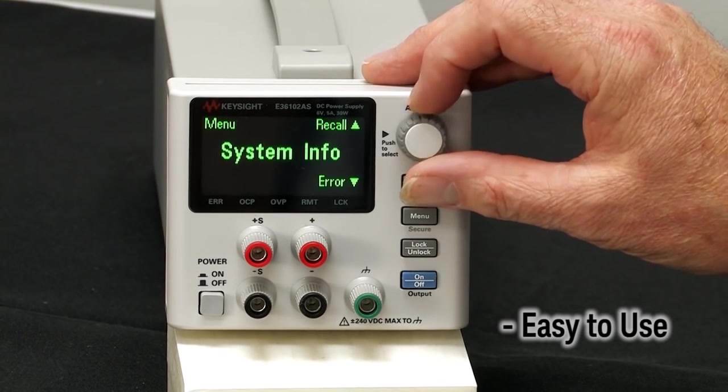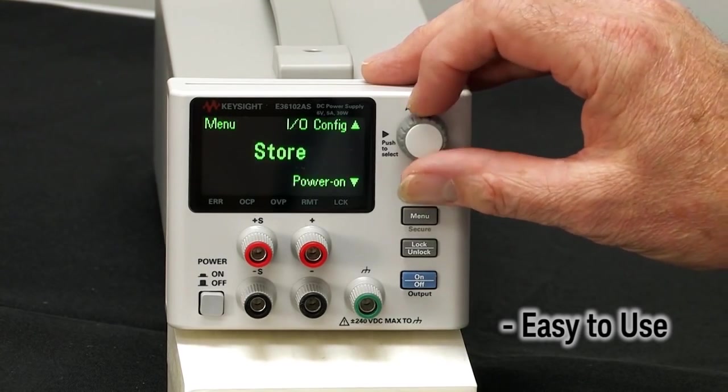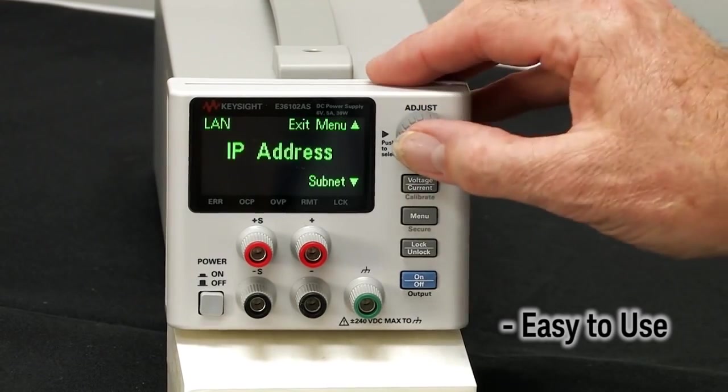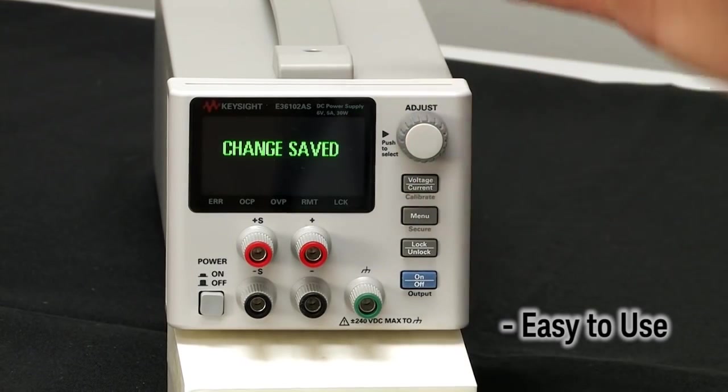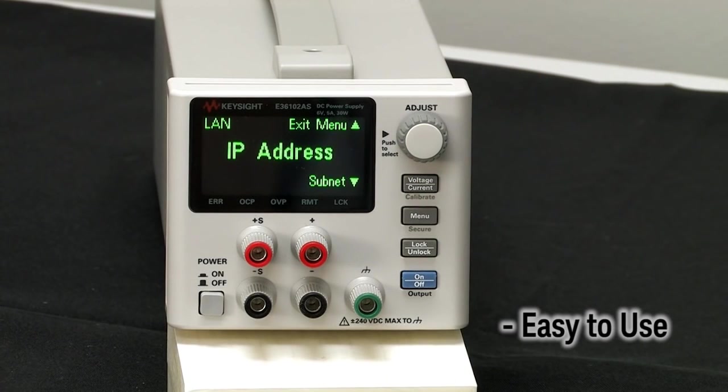So here's your LAN configuration. You want to change the IP address. You can very quickly make some changes on it and see the full IP address. Some of the other power supplies we've seen that have LAN built in require you to do awkward things with the seven segment displays, which make it very difficult to know that you have it correct. So that's a real benefit for setting this thing up on the LAN, which can be complicated.